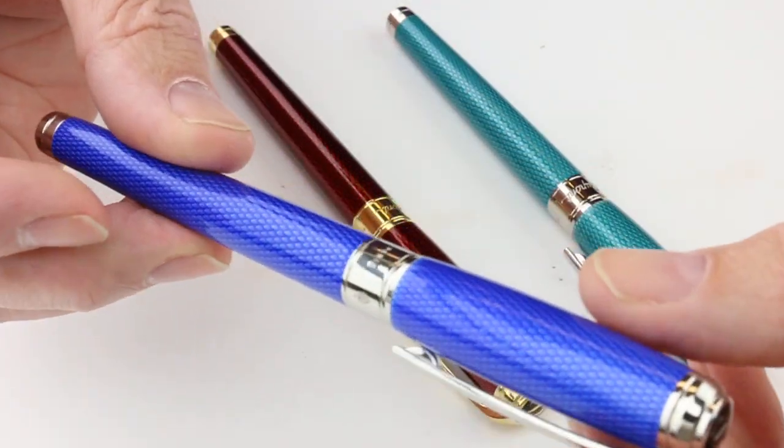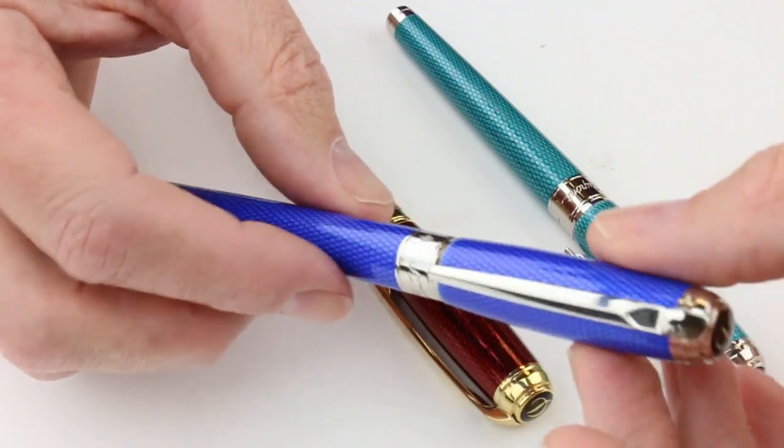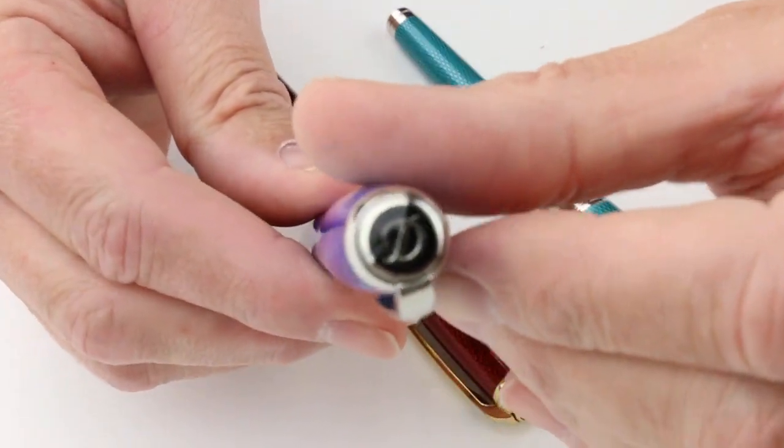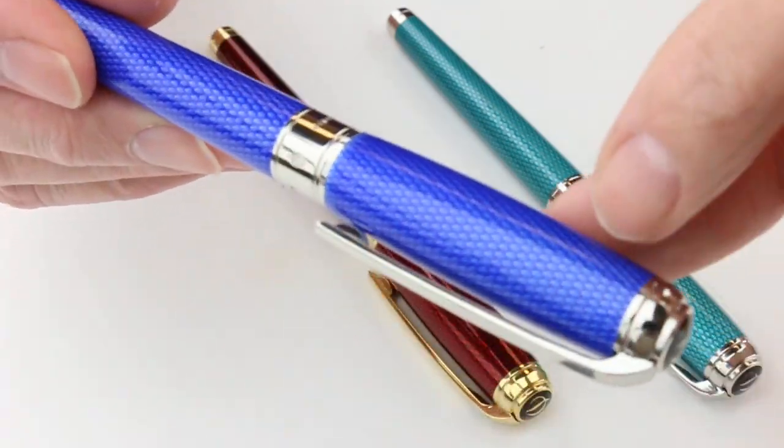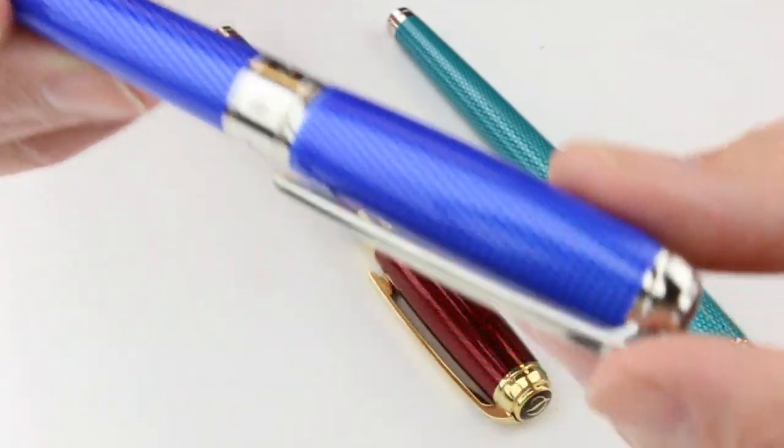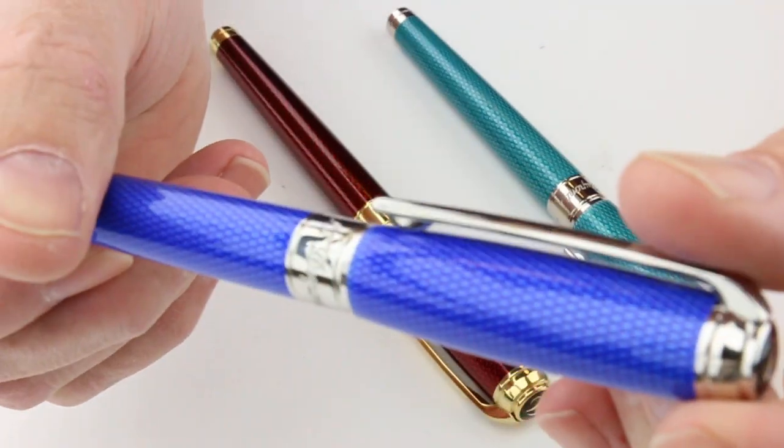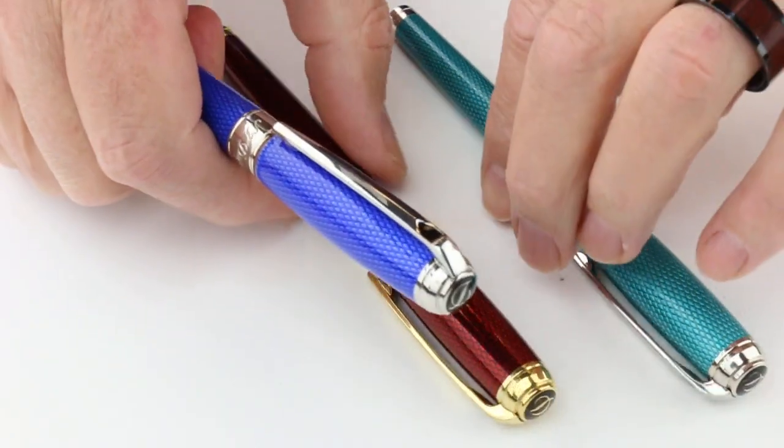They come in three different colors with different color trims, either silver or gold trim. The pen has a brass barrel with Urushi Lacquer coated over the top. It has a beautiful sparkling galoche pattern on the pens.